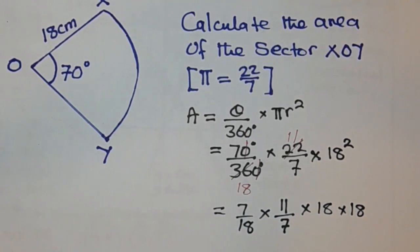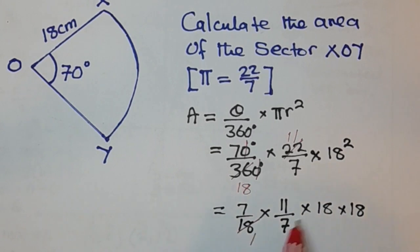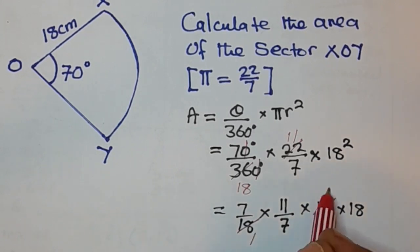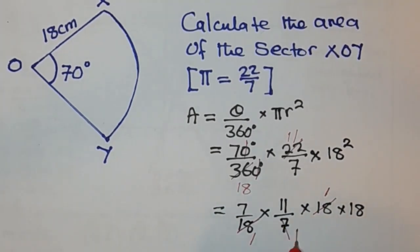So you can see that at this stage, 18 into 18 is 1, 18 into 18 is 1. So you can cross cancel here. Again, you can see that 7 into 7 is 1, 7 into 7 is 1.